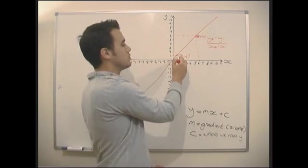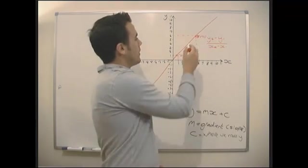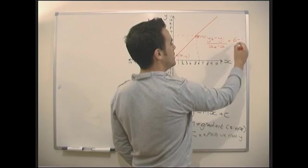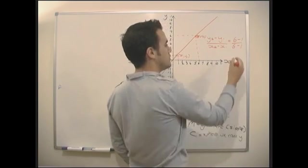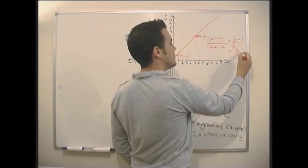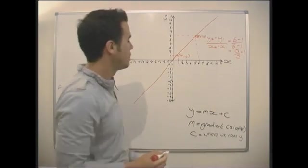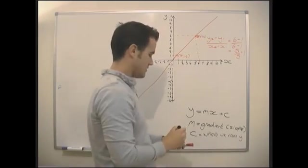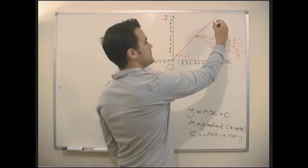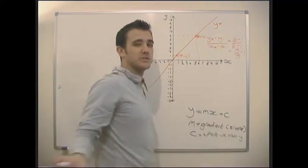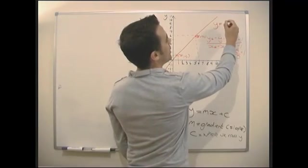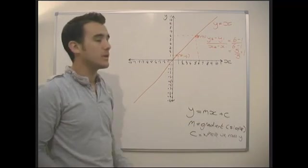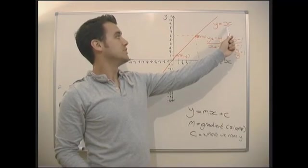So our y2 value in this case is 6, our y1 value is 1, and exactly the same for our x's. So basically just equals 5 over 5, which equals 1. So our gradient for this line is 1. So we've got the equation, y equals 1x. What do we say when we say 1x? We just say x. So that's y equals x plus 0, so that's just y equals x. It's still the form y equals mx plus c, it's just m is 1 and c is 0.